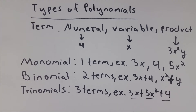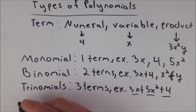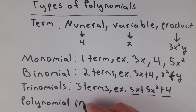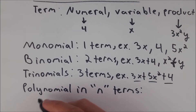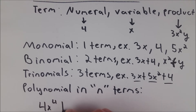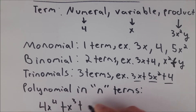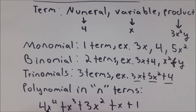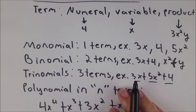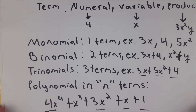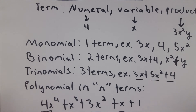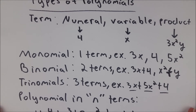Now if we go up to more terms after 3, we just have what we refer to as polynomials in n terms. For example, let's say we had 4x⁴ + x³ + 3x² + x + 1. We would call this a polynomial in 5 terms because it's a polynomial and we have 1, 2, 3, 4, 5 terms. You could have a polynomial in n terms, a polynomial in 1 million terms, whatever it might be. But these are the names we give them.